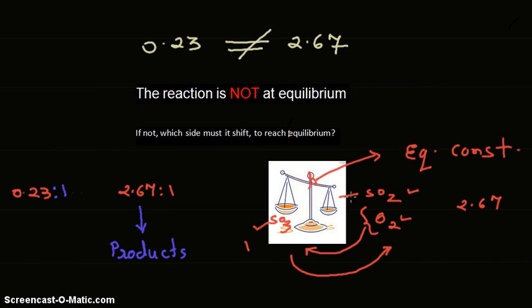As a result, you see the balance is tilted in one direction. Now what do you have to do to bring the balance back to its normal position? You have to increase the concentration of the reactant, that is SO₃.